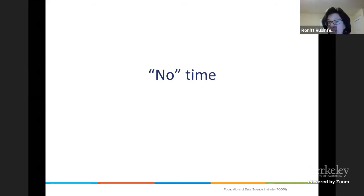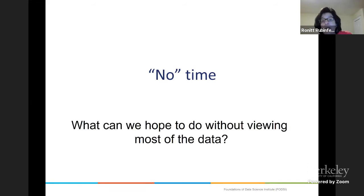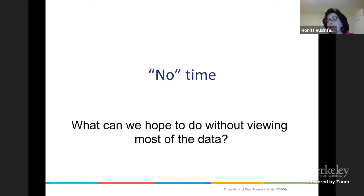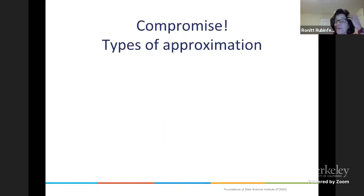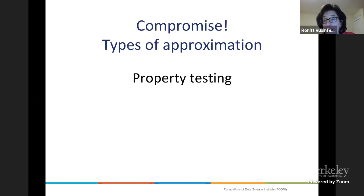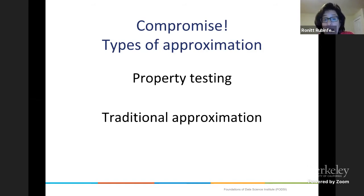I talked about communication and space and storage — now I want to talk about time. In this case, you don't even get to see all the data. Before, data was streaming by and you didn't get to remember much. Now you don't even get to see it. You're going to have to compromise and come up with some sort of approximation. We're going to think about two models: one is called the property testing model, and the other is the traditional approximation model. Let me start with the second one, because it's more familiar.